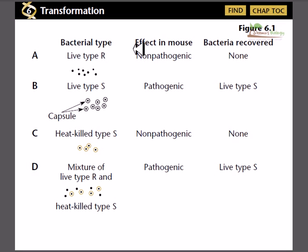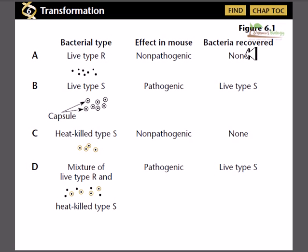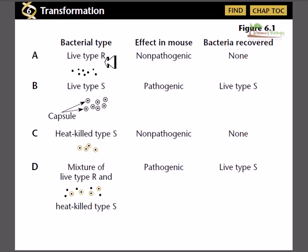The type of organism he had taken was pneumonia — the pneumonia bacteria. The R-type of pneumonia bacteria, which gives a rough colony, is not able to create any disease or symptom in the mouse. Then he took another strain of the same pneumonia bacteria, and this strain produces smooth colonies instead of rough colonies.